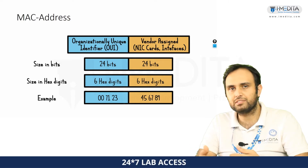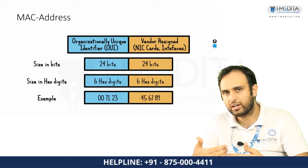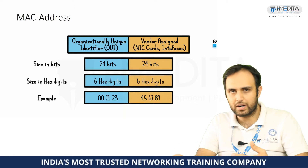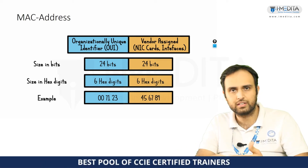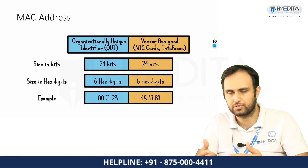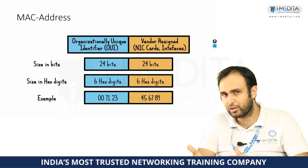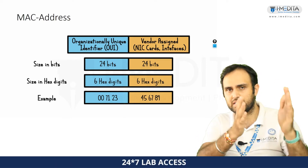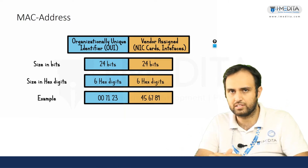Since the MAC address is expressed in hexadecimal, you can say the MAC address is 12 hexadecimal digits, because 1 hex equals 4 bits, so 12 hex equals 48 bits. We can also say the OUI is 6 hex digits and the vendor-assigned part is 6 hex digits.